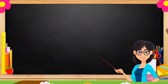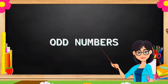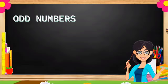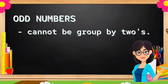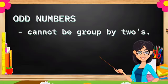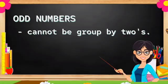Now, let's proceed with odd numbers. Now, what are the odd numbers? If the even numbers can be grouped by two, odd numbers cannot be grouped by twos.